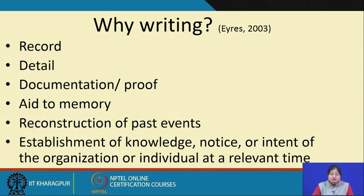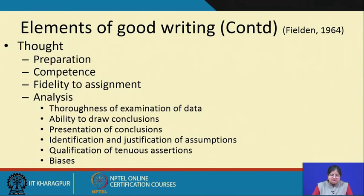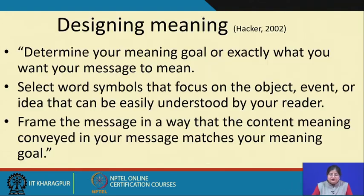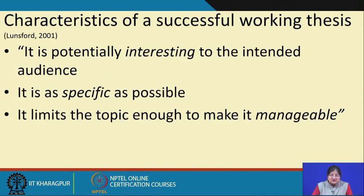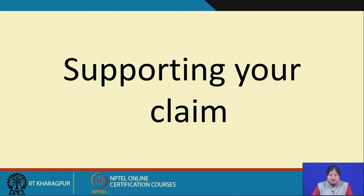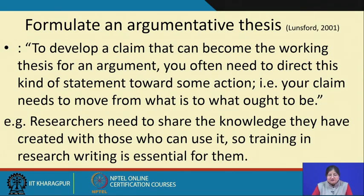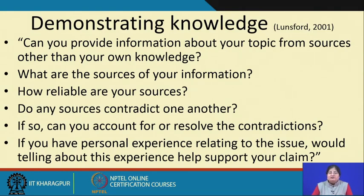We talked about various resources to help improve your grasp of the language, why writing matters, why you need to share things when you write, and some elements of good writing. Then we talked about drafting — the working thesis, a regular thesis, characteristics of a successful working thesis, selecting critical stances, and drafting guidelines. We moved on to supporting your claim: formulating an argumentative thesis, shaping your appeal, formulating good reasons to support your claim — how do you start writing your literature review and convince the reader about why you are convinced about certain things in the literature.